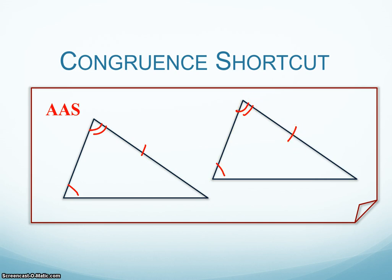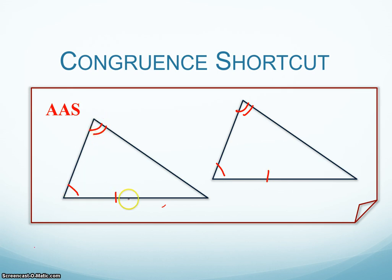Now this would also be true if I went the other way. If I chose to go the other direction — if I have an angle congruent to that angle, and then the next angle congruent to that angle, and then after that a side — you can read it side-angle-angle or angle-angle-side, just as long as you have two angles and then a side, or a side and then two angles. So if you have angle-angle-side, you know these two triangles are congruent.